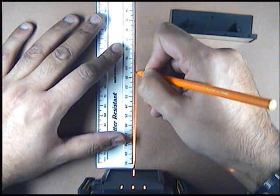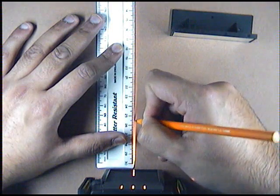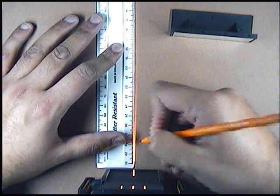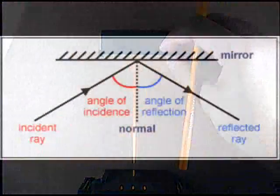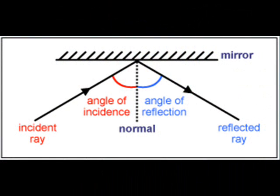Now we can draw a dotted line and we call this the normal. The light ray going towards the mirror is called the incident ray, and the light ray being reflected is called the reflected ray. The angle between the incident ray and the normal is called the angle of incidence. The angle between the reflected ray and the normal is called the angle of reflection.